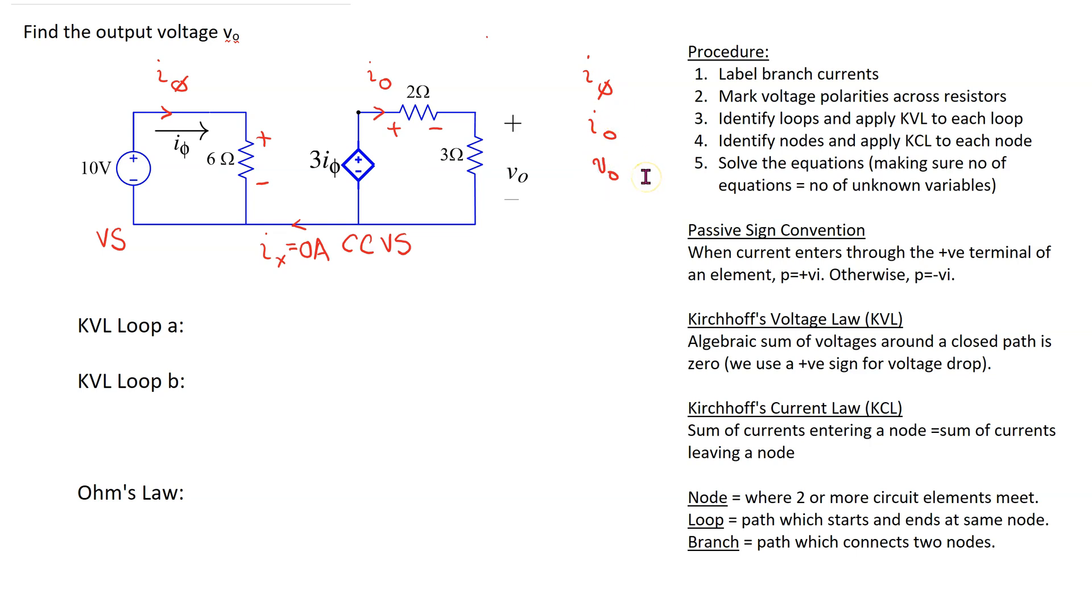Let's implement step 3, which is to identify the loops and apply Kirchhoff's voltage law to each loop. Since there is no current in this part of the circuit, we have only two loops. So we have a loop A and we have a loop B.